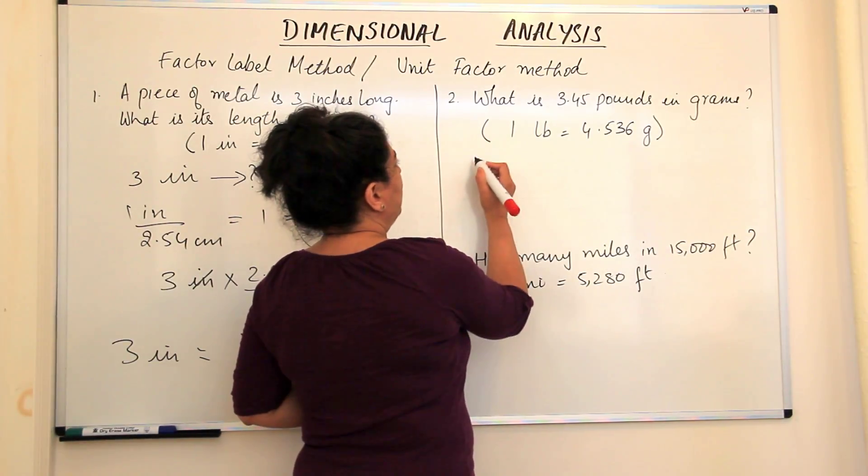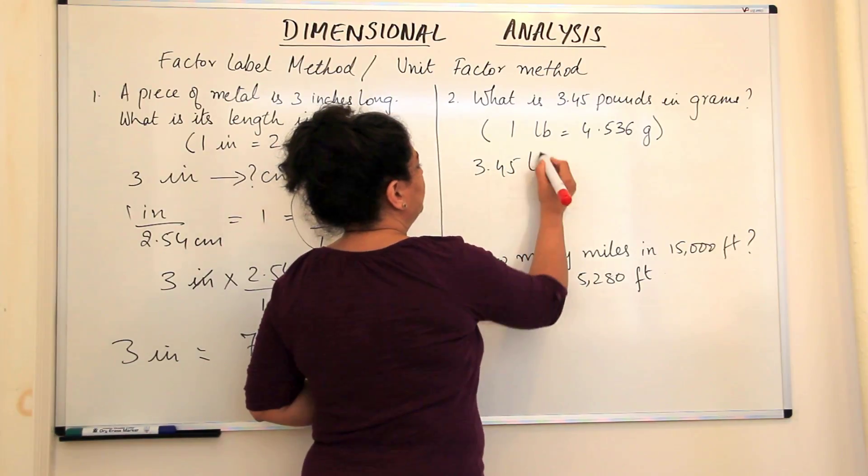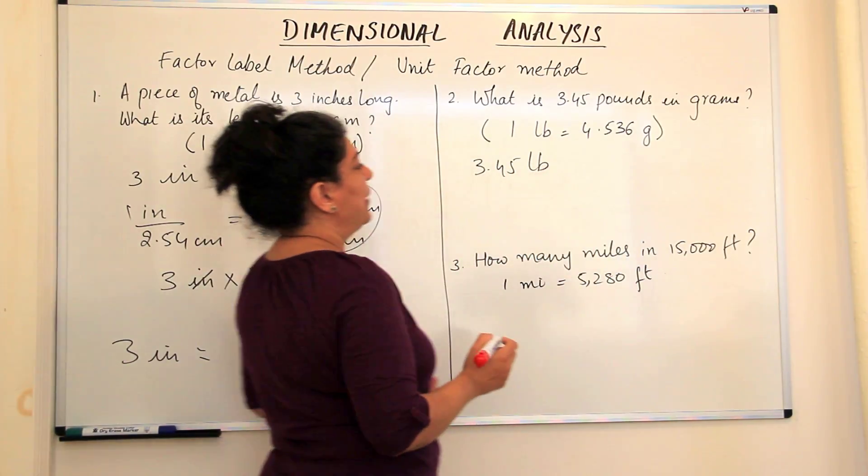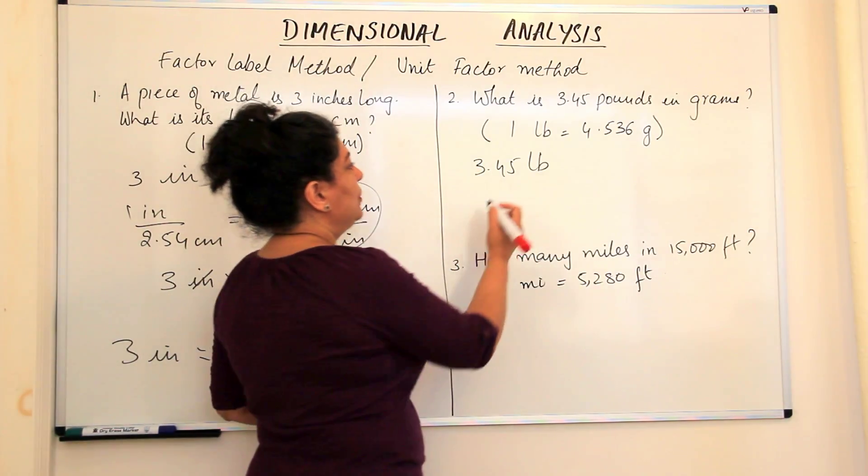What do I want? What's my aim? 3.45 pounds has to be converted into grams. So I want to cancel out the pound.